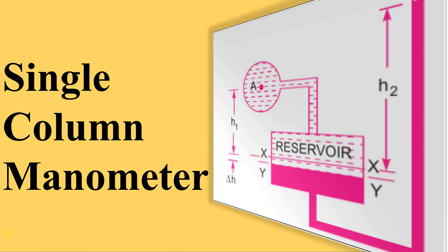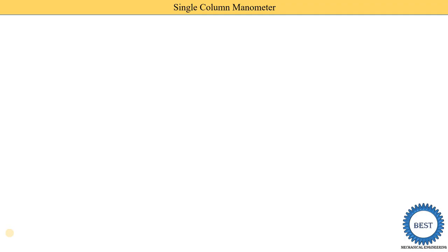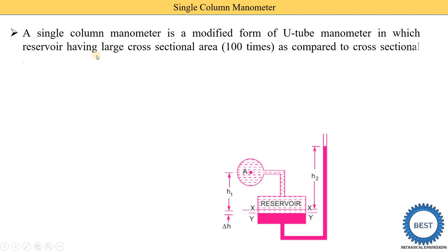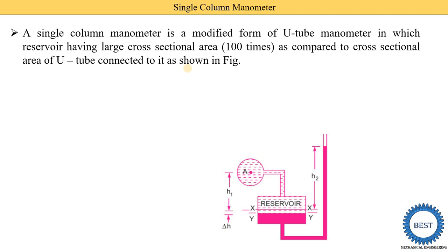In this video we discuss the single column manometer. The single column manometer is a modified form of the U-tube manometer, in which a reservoir having a large cross-sectional area — one hundred times the cross-sectional area of the U-tube — is connected to it. As a modification, the reservoir is added in the left column. The reservoir is a rectangular component whose area is width times length, while the tube area is pi/4 d-squared.